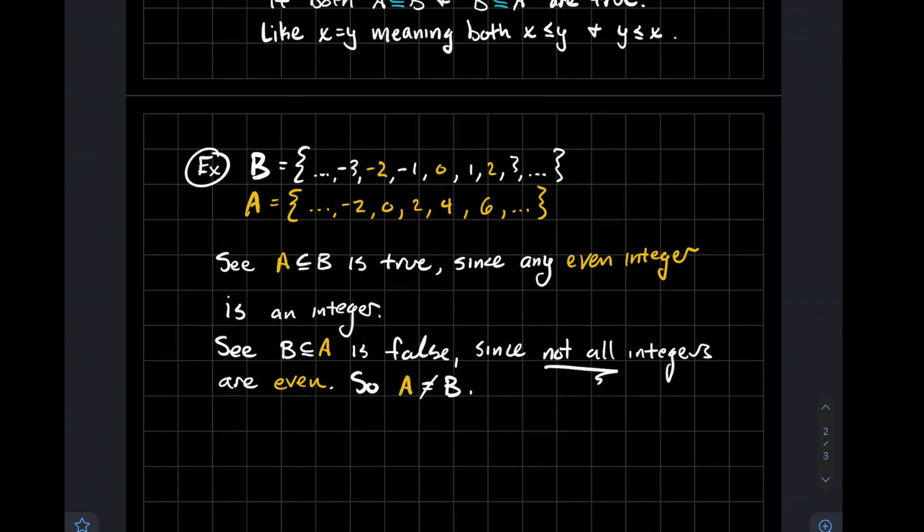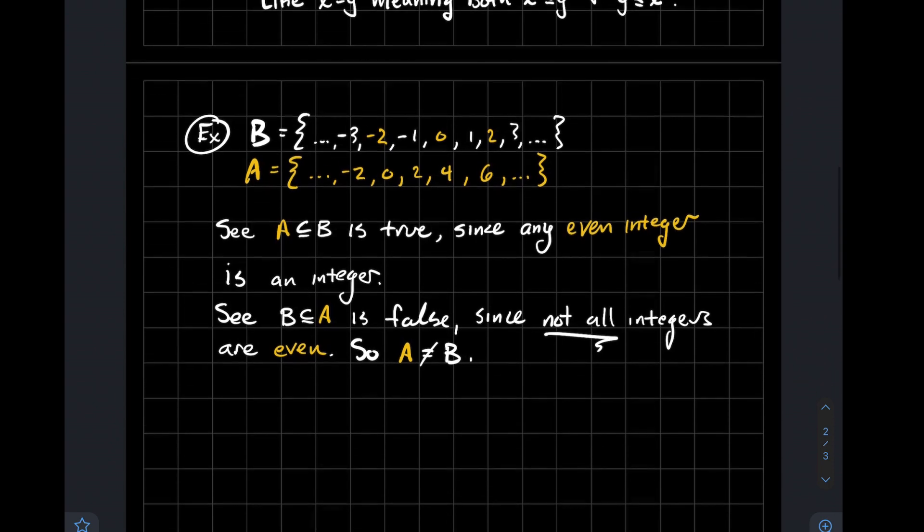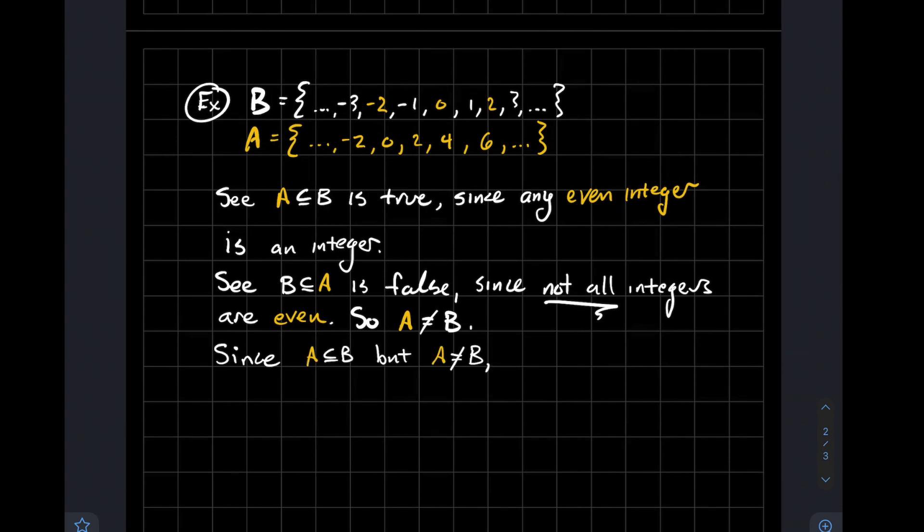And so what does that tell us? That tells us for sure that A and B are not the same set. So we're just trying to use a concrete example to illustrate how we use some of these symbols and ideas that we've learned in the past few minutes. We've shown that A is a subset of B, but A is not the same thing as B. Therefore, we could say that A is a proper subset of B.